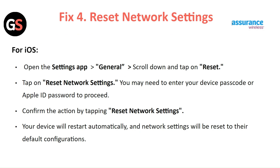Fix 4: Reset Network Settings. For iOS, open the Settings app, go to General, scroll down and tap Reset, then tap Reset Network Settings. You may need to enter your device passcode or Apple ID password to proceed. Confirm the action by tapping Reset Network Settings and your device will restart automatically, resetting network settings to their default configurations.